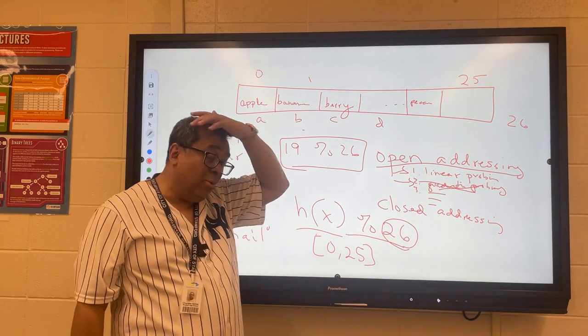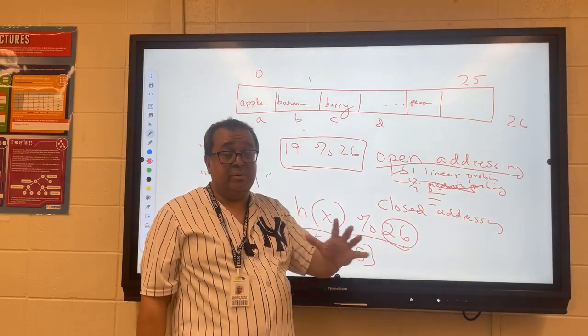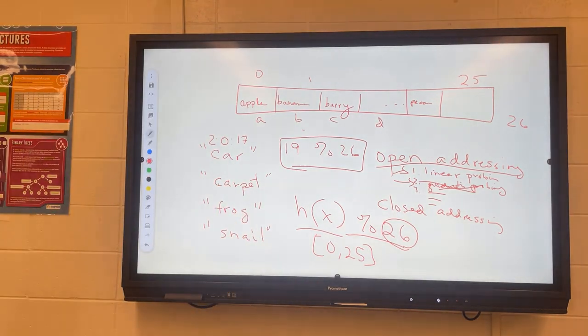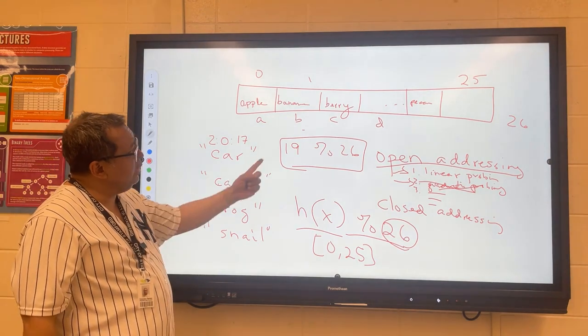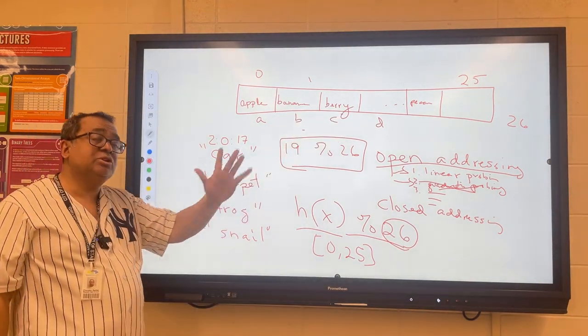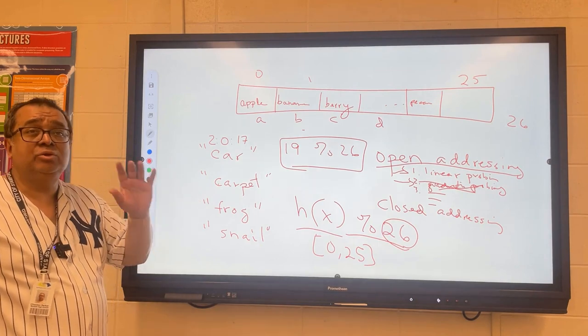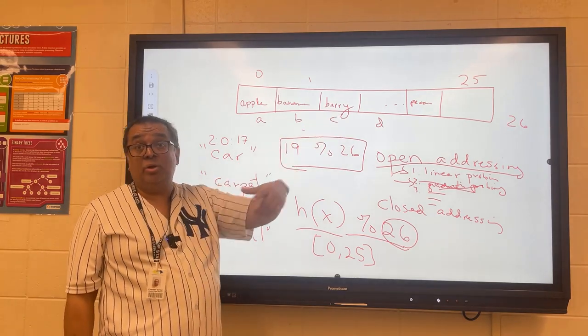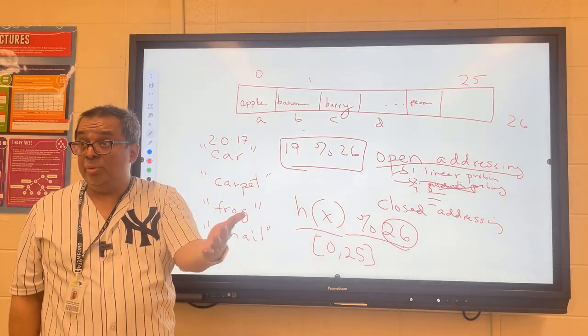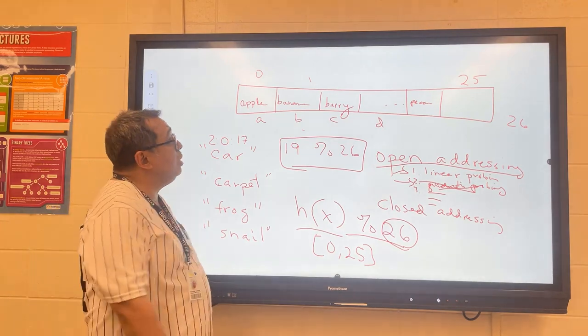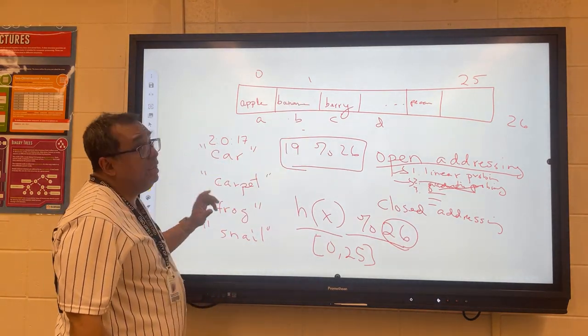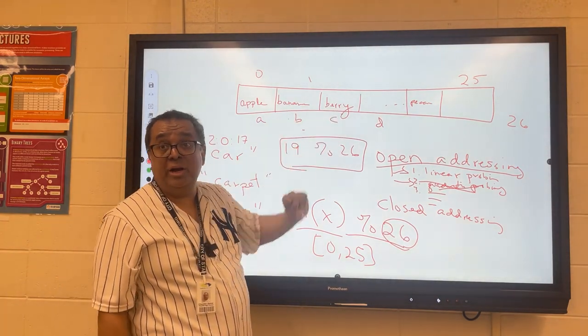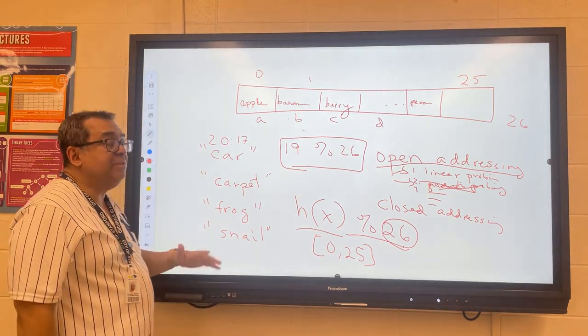I want to talk about one other issue about open addressing which you may not have thought of immediately. Let's go back to our strategy here for storing banana and berry. You know what, let's go back to our earlier technique where we use only the first letter. Use the first letter, so if we use the first letter you agree that banana and berry will create a collision, right? Because they both use the letter B. So we store banana here, and then when we go to store berry we see that this slot is used, so we move berry and put it over here. We're all good so far, right?